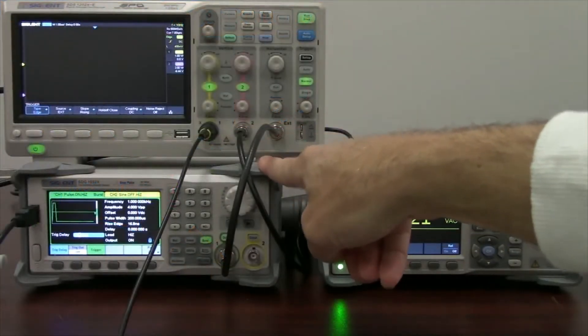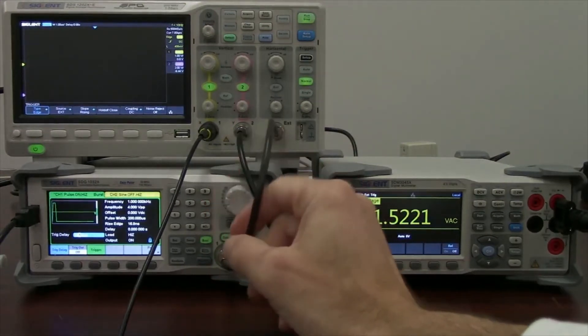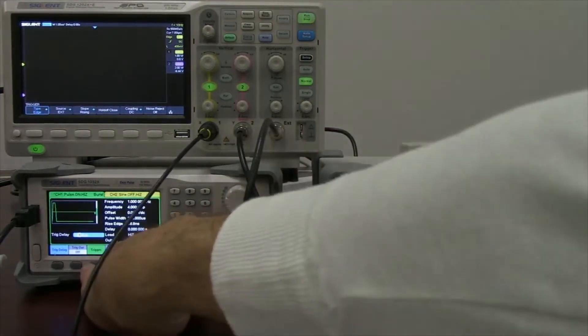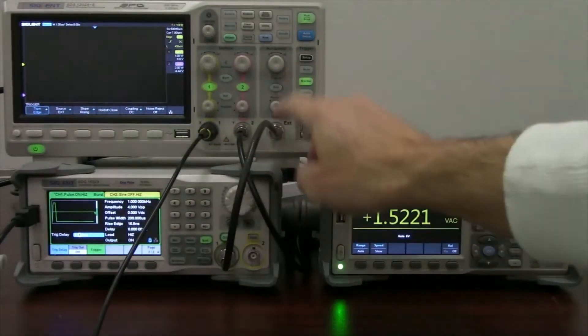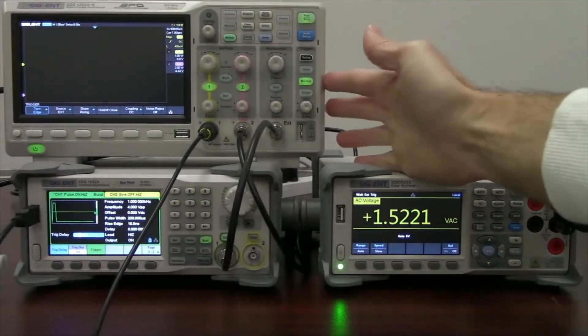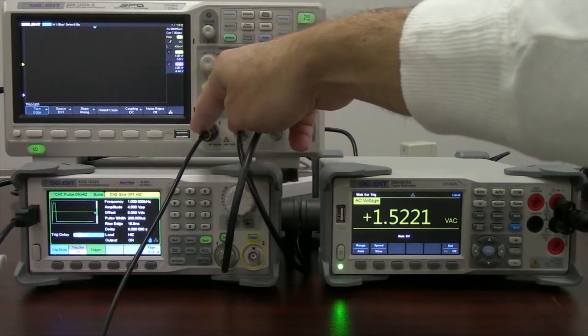And all of those are going to be synchronized. I'm using the SDG1032X waveform generator simply to create that external burst. I'm going to manually control that by pressing this trigger button here. When I press the trigger button, a signal is going to go to the external trigger that's going to meet the particular trigger configuration that I have set for the oscilloscope.